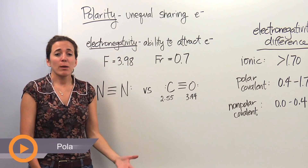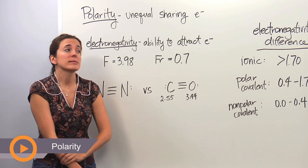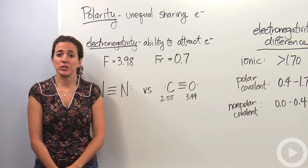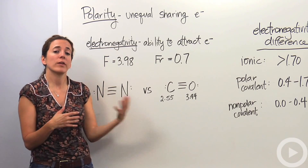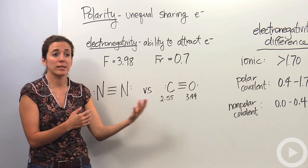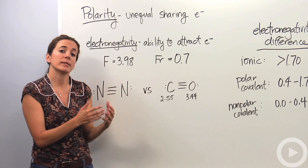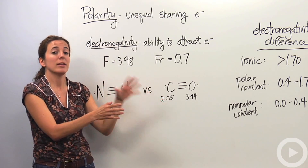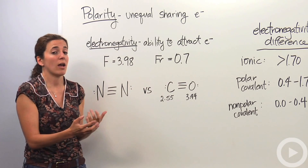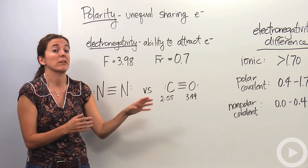Let's talk about polarity and polar molecules and polar bonds and what that means. Polarity means an unequal sharing of electrons. When we talk about covalent bonds, they're actually sharing those electrons between them — those valence electrons — but sometimes they're not equal sharing. Sometimes one element is actually going to share those electrons more than the other. They're actually going to be electron hogs versus electron givers.